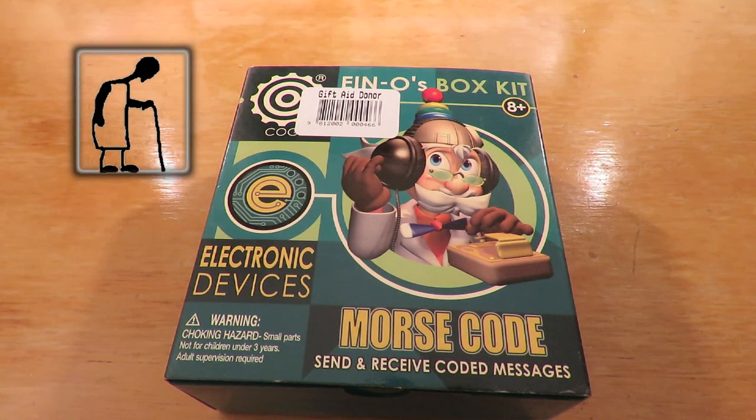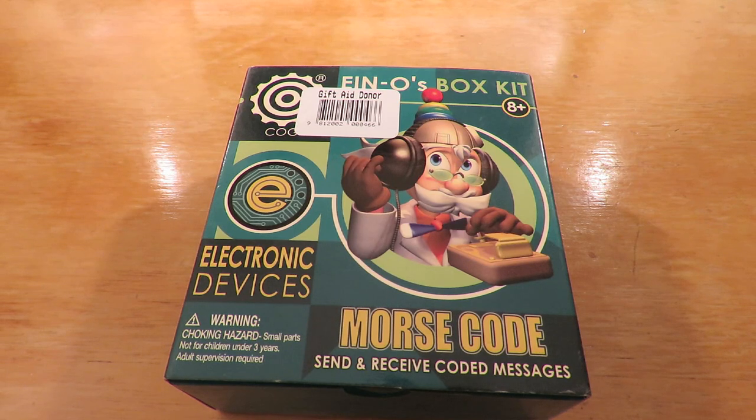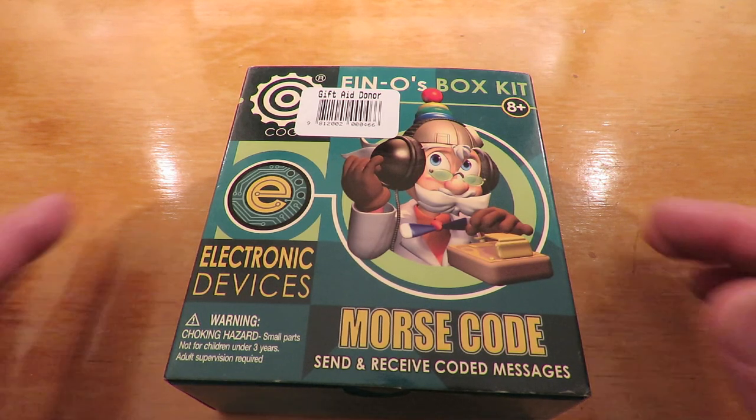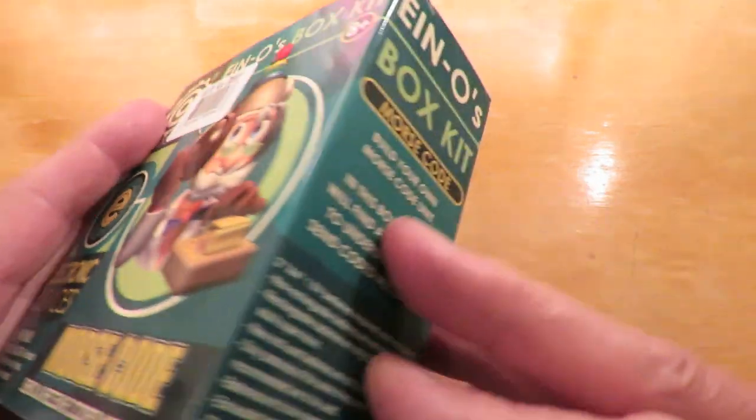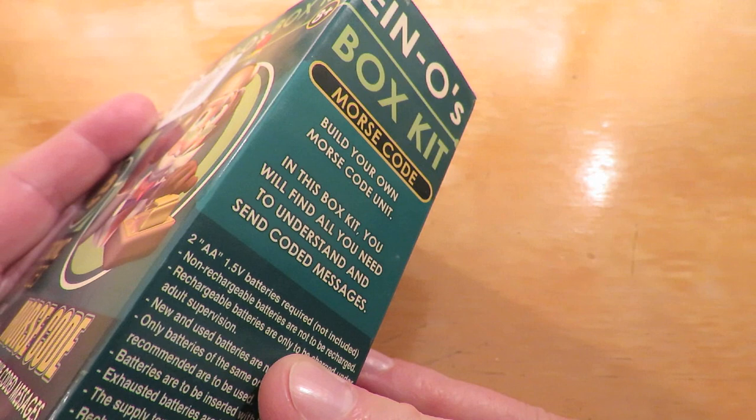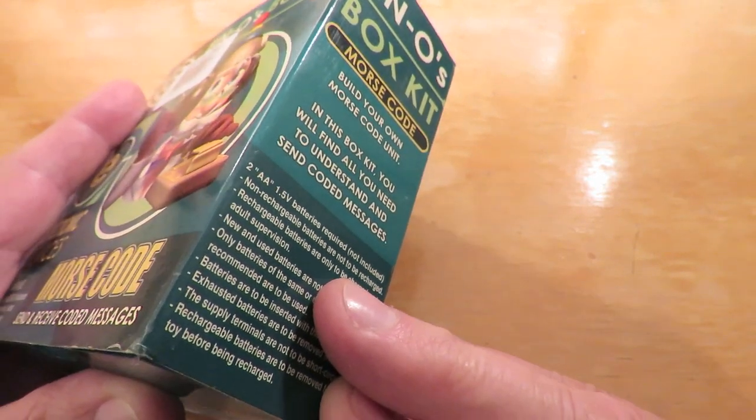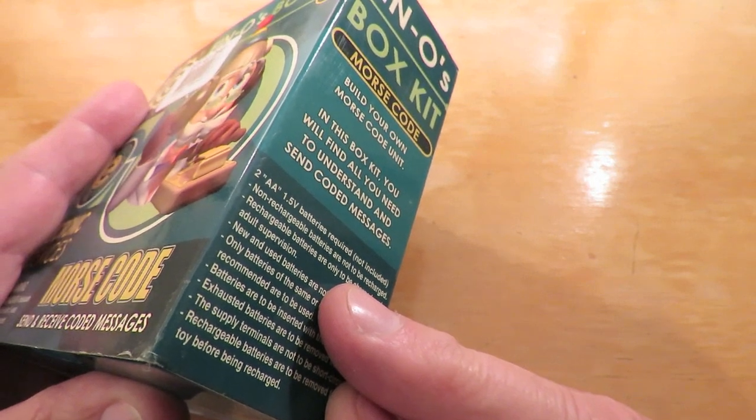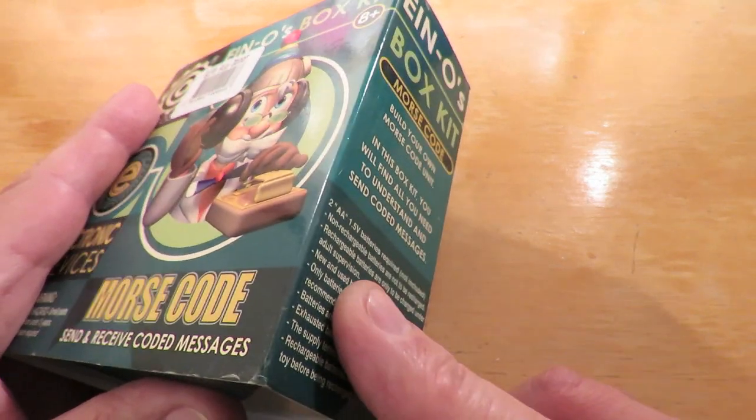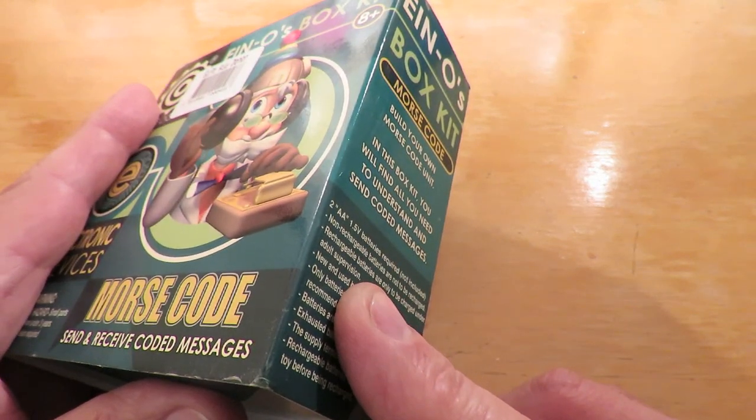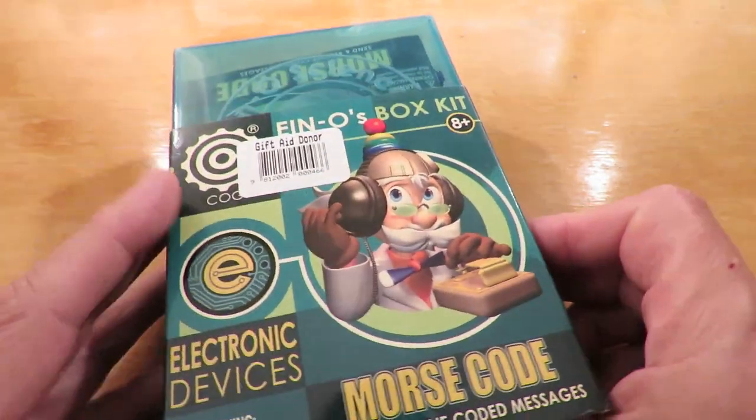Hi guys, another little assembly kit I picked up in a charity shop for a pound. It's that INO box kit, Morse code, build your own Morse code unit. Find all you need to understand and send coded messages. Need two AA batteries.